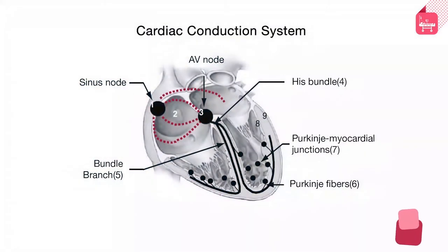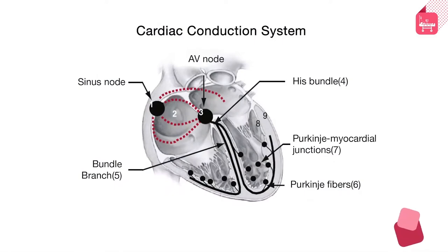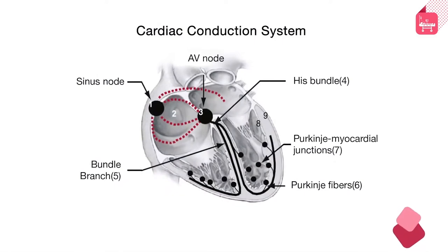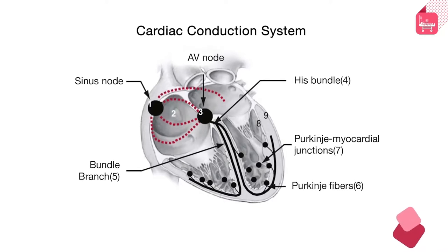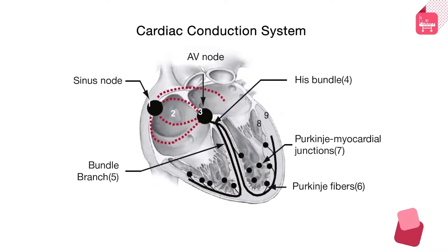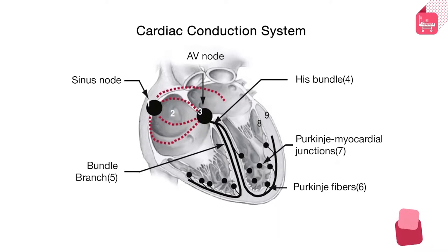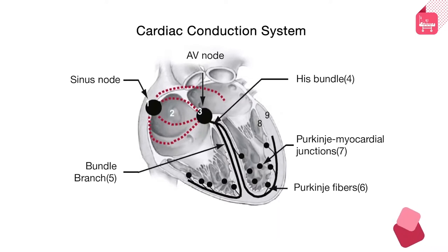The cardiac conduction system, portrayed here, is in effect like the electrical highway or the electrical superway of the heart. It is the most efficient way of transmitting impulses down to all parts of the heart. The impulse originates from the sinus node, which is situated at the junction of the superior vena cava and the right atrium.